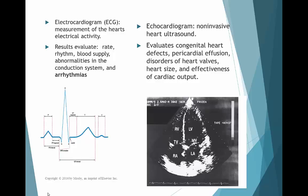An electrocardiogram looks at the electrical activity of the heart. The picture here shows one normal electrical cardiac cycle. We look for abnormalities including changes in the QRS, ST segment, P wave, and PR interval, which can impact blood circulation to the body and indicate changes within the heart muscle itself.